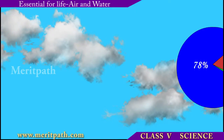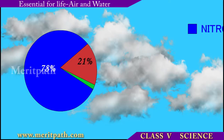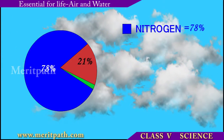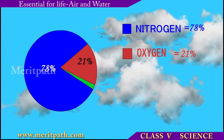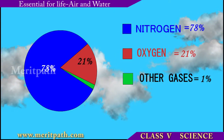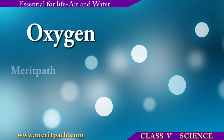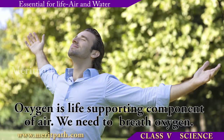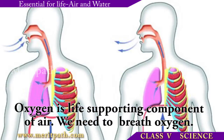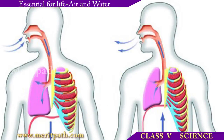The atmosphere consists of 78% nitrogen, 21% oxygen, 1% water vapor, and a minute amount of other gases like argon and carbon dioxide. Oxygen is a life-supporting component of air. We need oxygen to breathe, and if breathing stops there is no supply of oxygen to the brain and the cells begin to die.